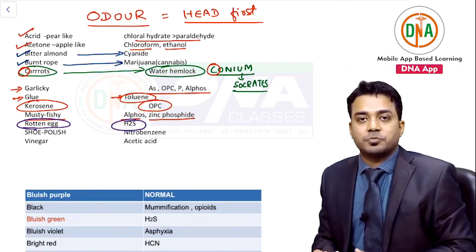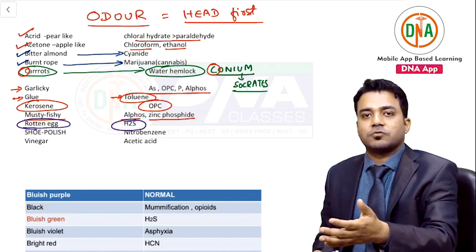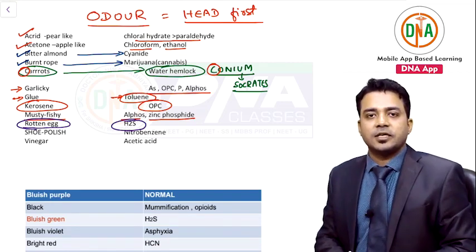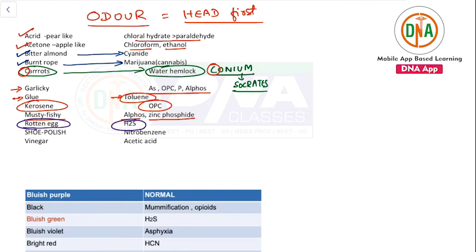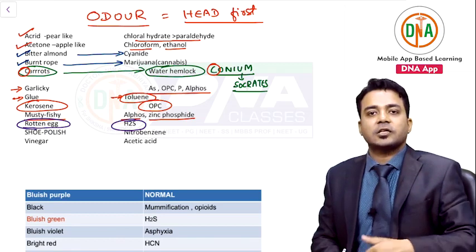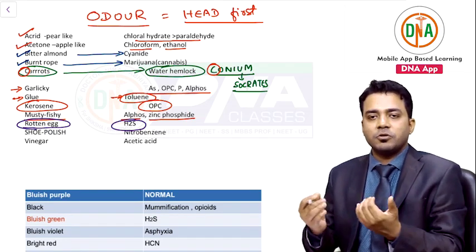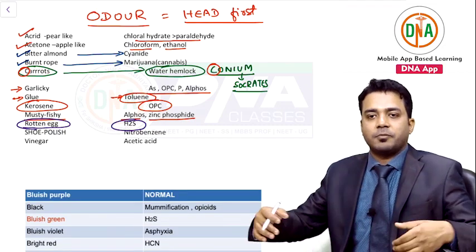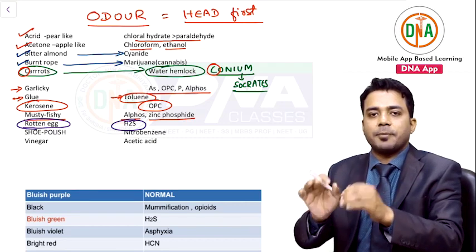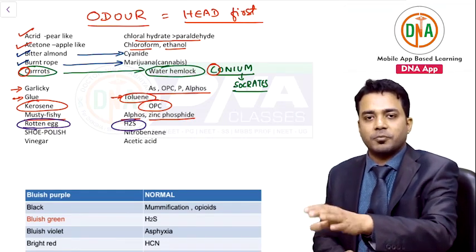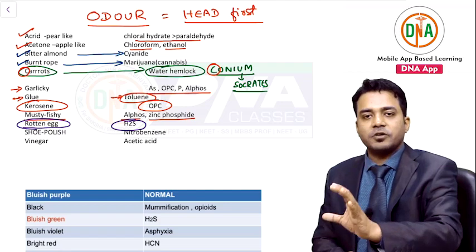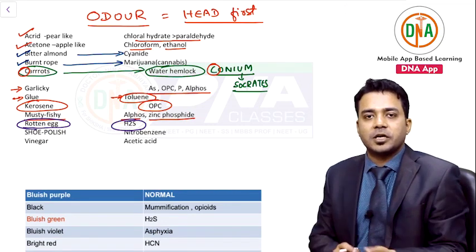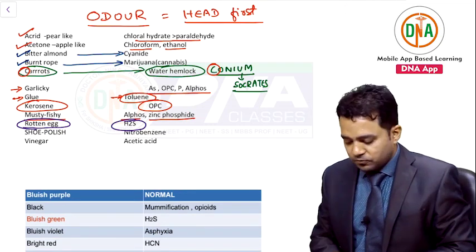Important question: H₂S was the gas responsible for death in the Japanese detergent suicide technique. Females in Japan would surround a bucket filled with water and many chemicals/detergents. The mixing of chemicals produced H₂S gas, which caused the deaths of all those females.